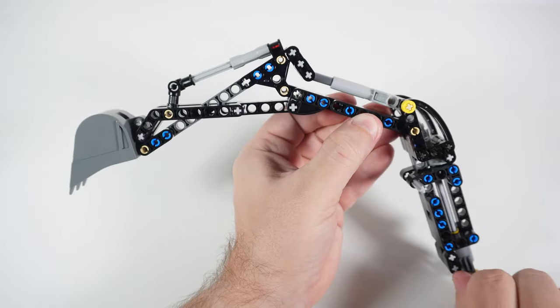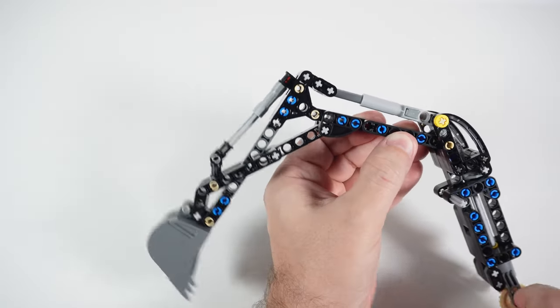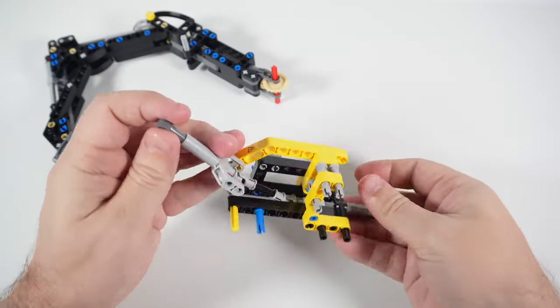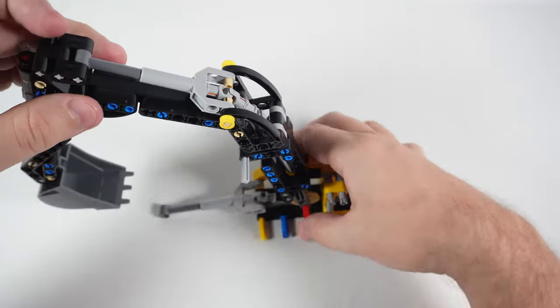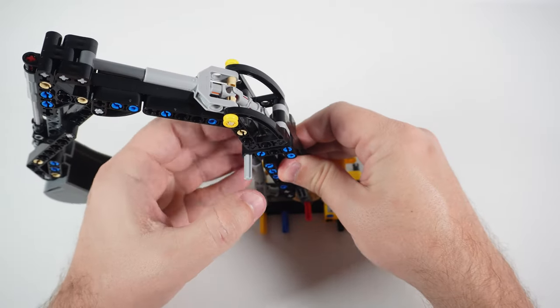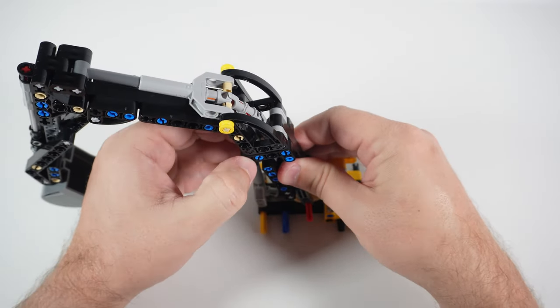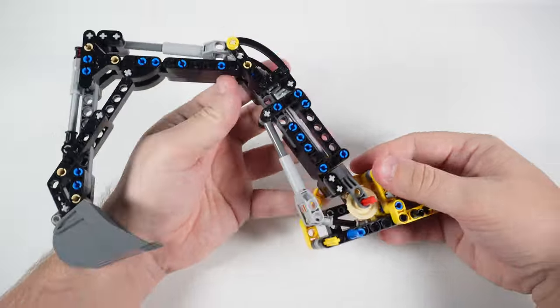They obviously are not working the same way as in real life, but they create the same straight line motion that allows to control the boom independently from the arm and the bucket. Later in the first stage we also build a central part of the excavator body and connect both components together, creating something like a drive shaft that will allow us later to control the front part with the knob located on the back side.